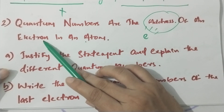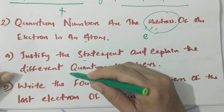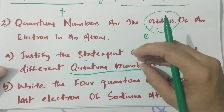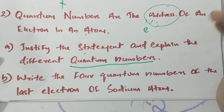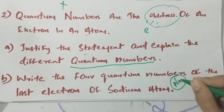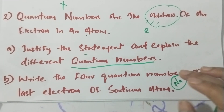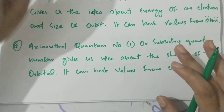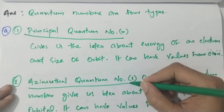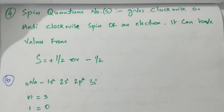Let's explain the different quantum numbers. Write the four quantum numbers of the last electron of sodium atom. The four types of quantum numbers are: principal quantum number, azimuthal quantum number, magnetic quantum number, and spin quantum number.